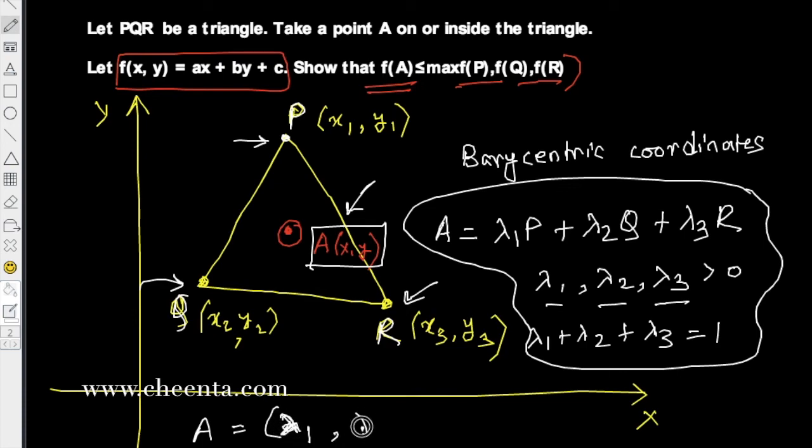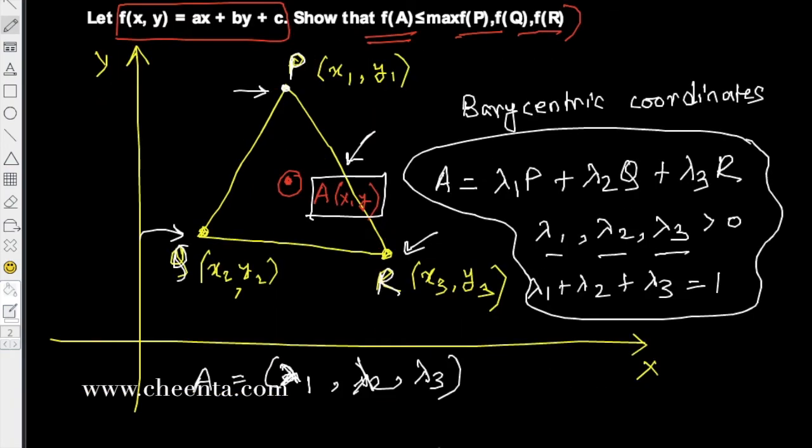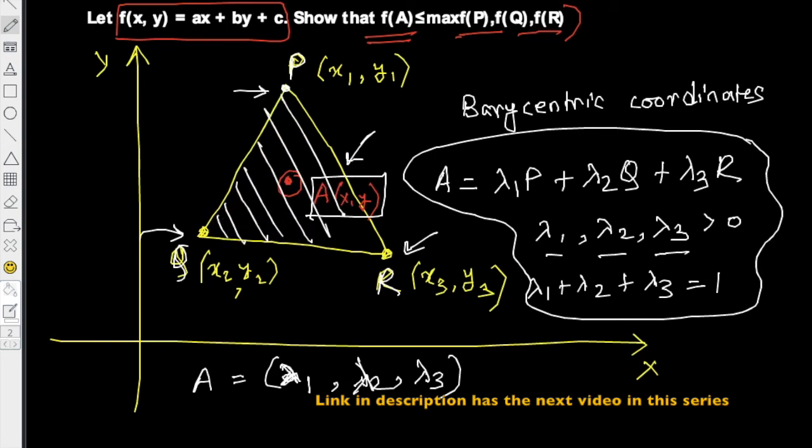So barycentric coordinates are a different coordinate system where the reference frame is not x-y axis or it's not a particular straight line as it is in the case of polar coordinates, but it is a triangle. So in this case, PQR, this particular triangle, is our reference frame, and the point A can be expressed using three numbers λ1, λ2, λ3.